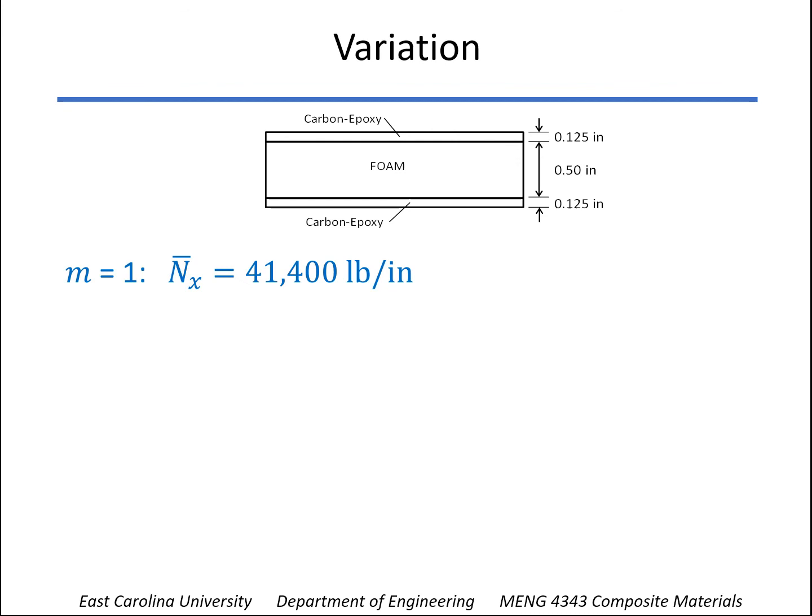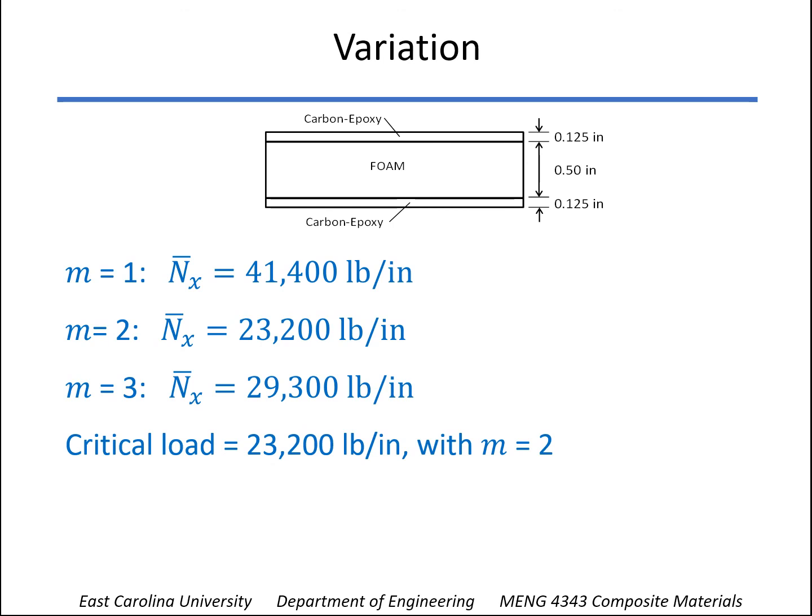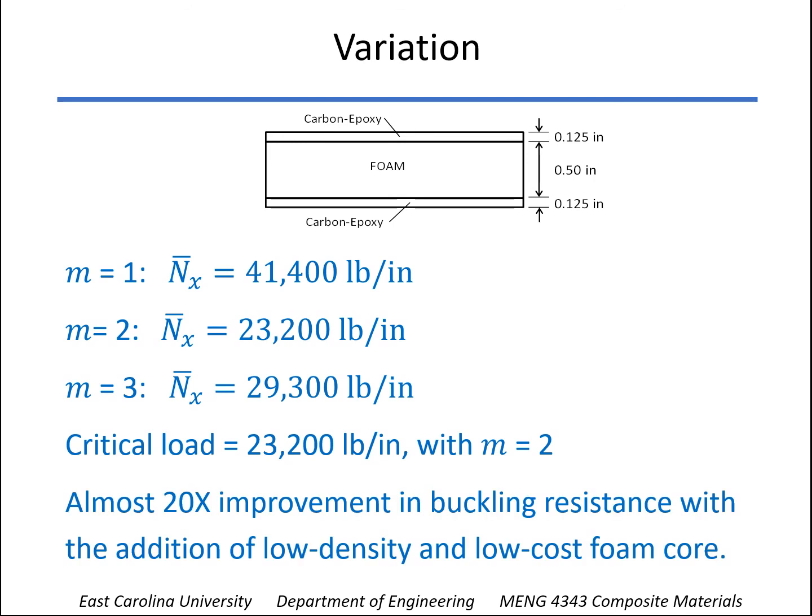So, if you plug into your equations for that, once again, you'll find that M equals 2 is the critical value, the critical shape, and that the critical load is 23,000 pounds per inch. So comparing that without the foam core, you see almost a 20 times improvement of the buckling resistance.